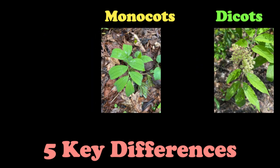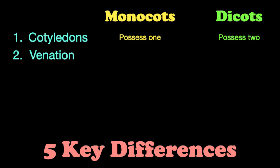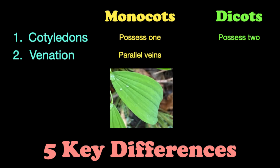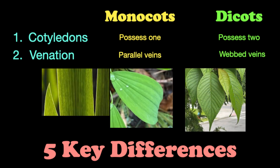But this isn't going to help you very much in classifying fully grown plants. The best way to tell the difference between a monocot and a dicot is by looking at the vein pattern. Monocots have parallel veins, while dicots have reticulate or webbed veins.